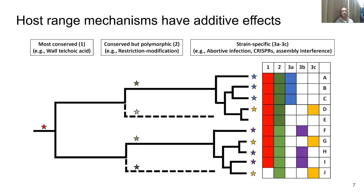I also hypothesized, based on this literature review, that S. aureus phage host range mechanisms have additive effects at different levels of phylogenetic conservation. Wall teichoic acid is present throughout the species; restriction modification is also conserved through the species but polymorphic, with different clonal complexes having different specificity; and finally, at the lowest level, strain-specific mechanisms such as abortive infection are conserved sporadically in a few strains across multiple clades. It's the combination — the additive effects at these three different levels — that I hypothesize together determine host range.